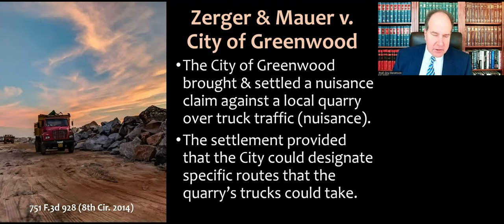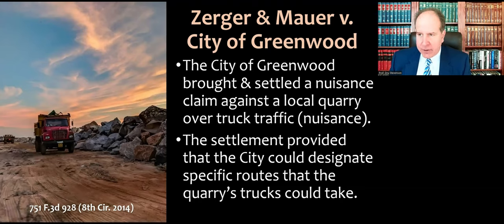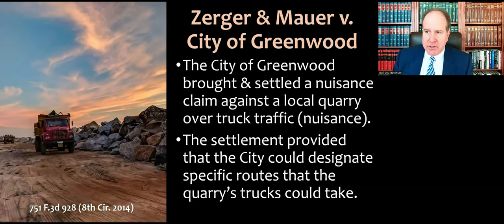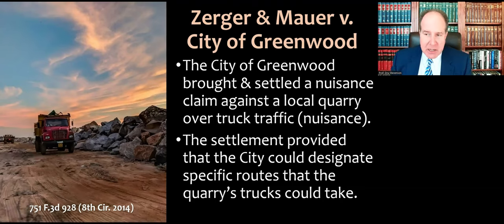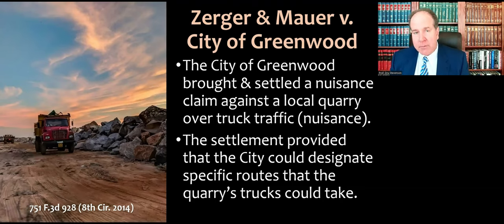The ABA opinion gives a few helpful illustrative examples. The first is Zerger and Bauer v. City of Greenwood. The city of Greenwood, Missouri, brought and settled a nuisance claim against a local rock quarry over truck traffic — the trucks carrying rocks and gravel made a lot of noise and dust. The settlement provided that the city could designate specific routes for the quarry's trucks, routing them away from residential areas or Main Street.